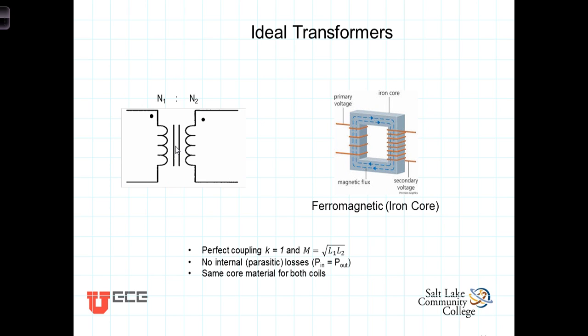The approximations that we apply to the linear transformer to come up with the ideal transformer model is that we assume perfect coupling, that the coefficient of coupling k is equal to 1, which then makes M, the mutual inductance between the two, equal to just the square root of L1 times L2.